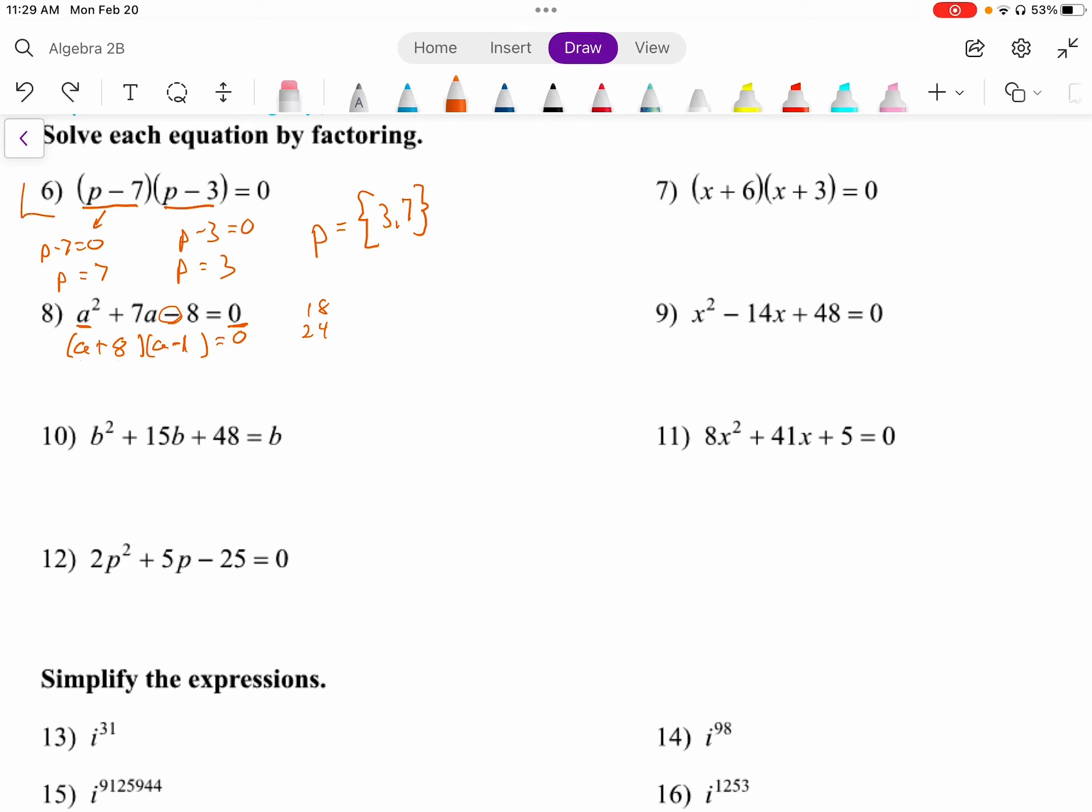And now we're back to looking like the form of number 6. So either a plus 8 equals 0, or a minus 1 equals 0. So a equals negative 8, comma 1.